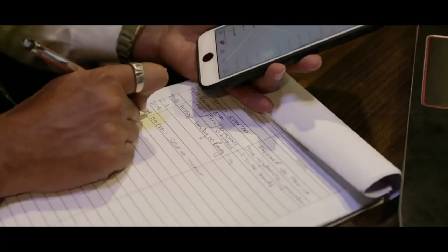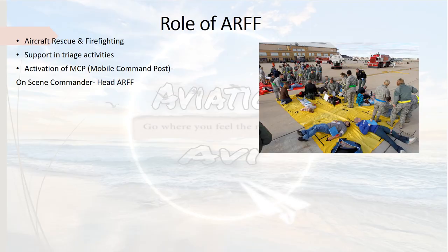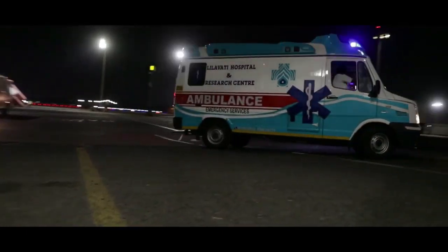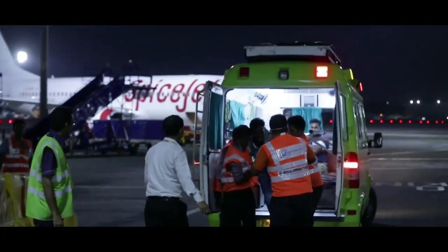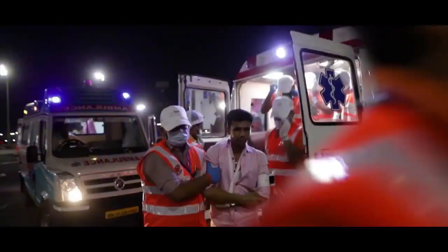Another ARFF responsibility is activation of the mobile command post — the on-scene command, coordination, and communication center for any accident. This is the point where heads or representatives of all cooperating agencies assemble, receive and disseminate information, and make major decisions regarding rescue operations. Other responsibilities include responding to dangerous goods accidents, assisting medical first aid, providing assistance to doctors in the triage area, and arranging speedy evacuation of injured casualties — especially P1 and P2 — to hospitals.